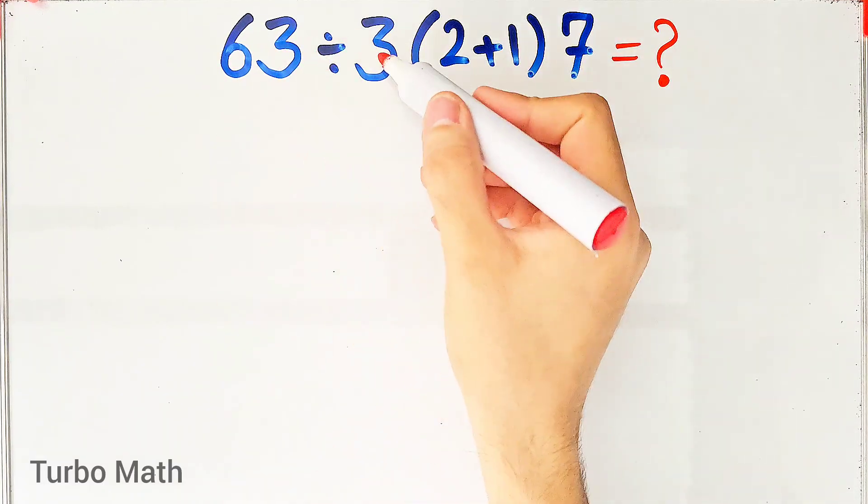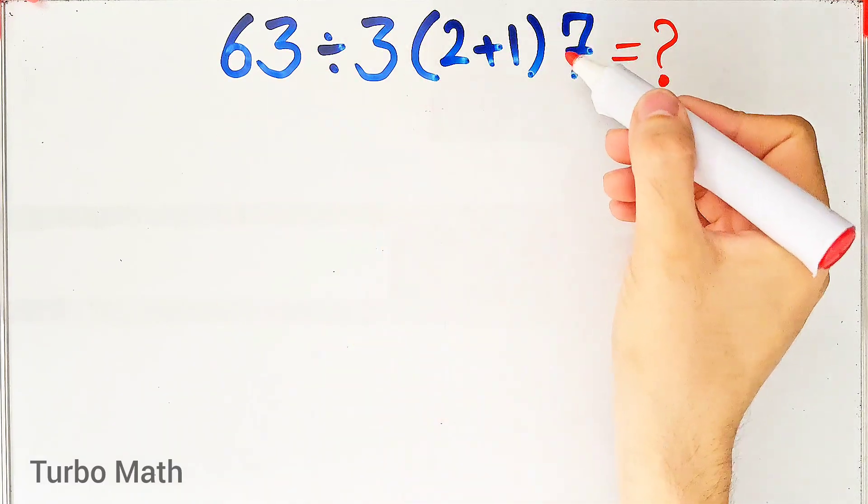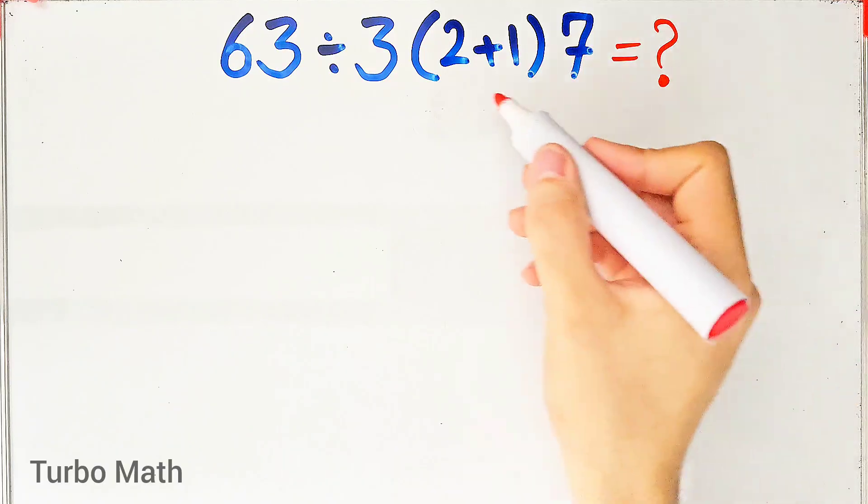63 divided by 3, then times 2 plus 1, then times 7. What is the answer to this question? Can you solve it?